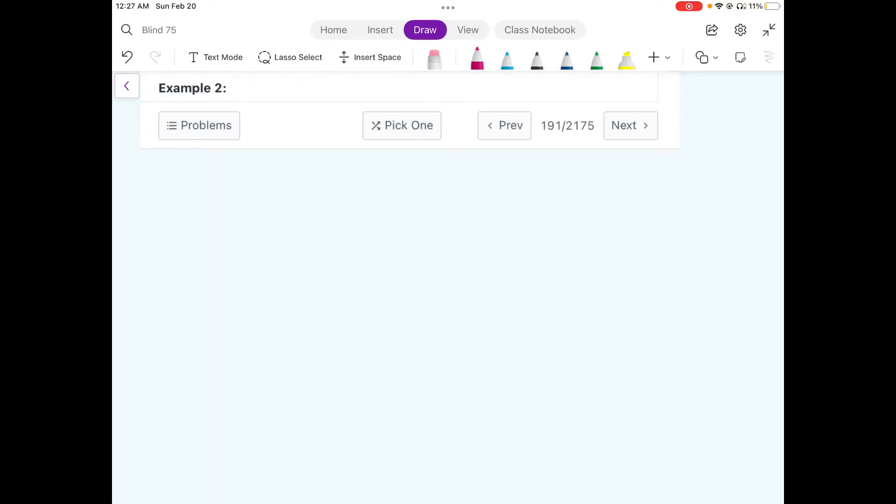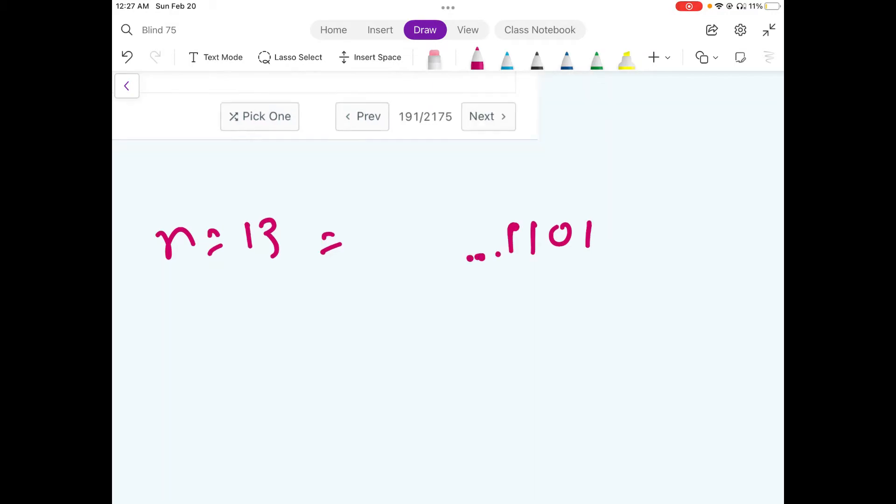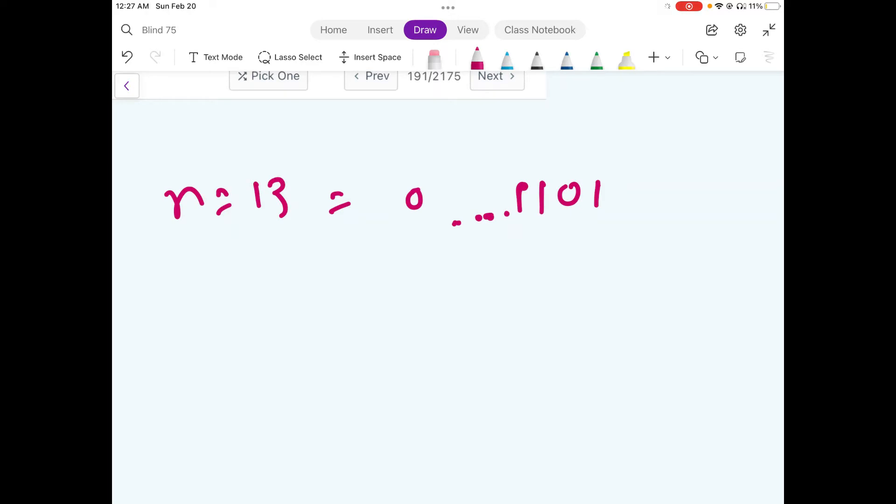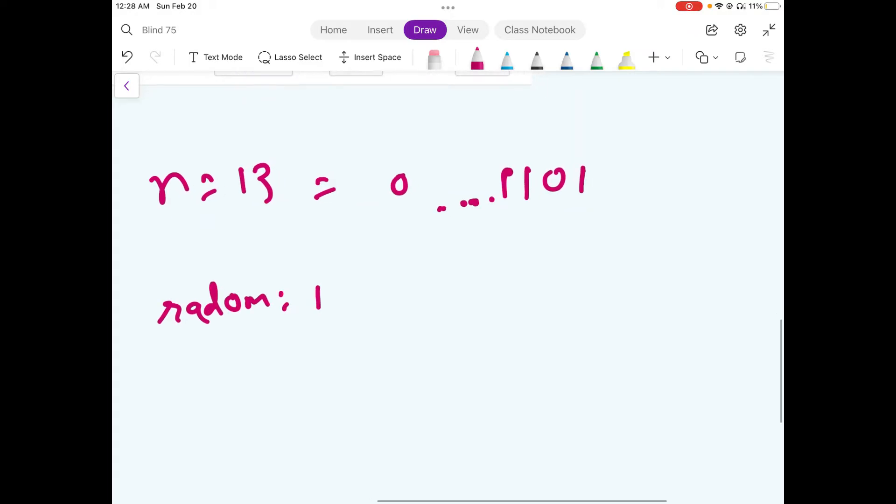Suppose the input we have is 13. If we represent it in binary, it would look like this and we would have 28 zeros in the prefix.